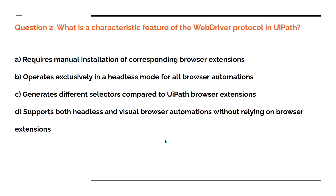Moving on to the second question: what is a characteristic feature of the web driver protocol in UiPath? Options are: A - requires manual installation of corresponding browser extensions; B - operates exclusively in headless mode for all browser automations; C - generates different selectors compared with UiPath browser extension; D - supports both headless and visual browser automations without relying on browser extensions. Which is the right answer?